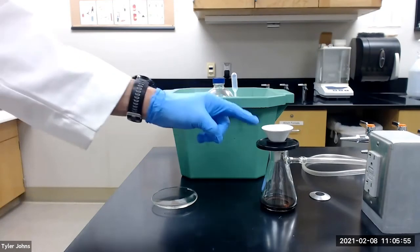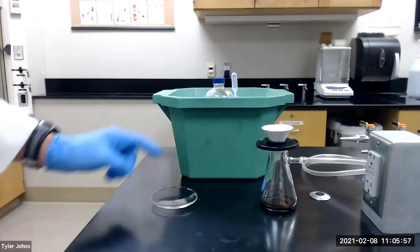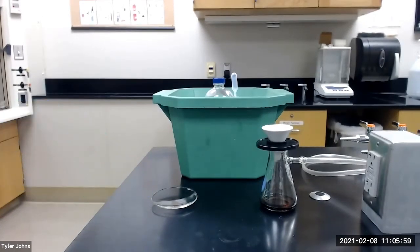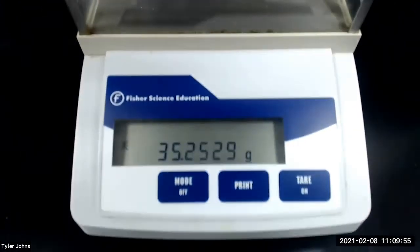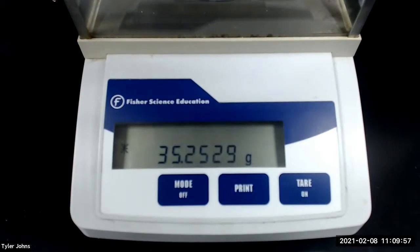While our crystals continue to dry, we will next pre-weigh a watch glass. The mass of the pre-weighed watch glass is 35.2529 grams.